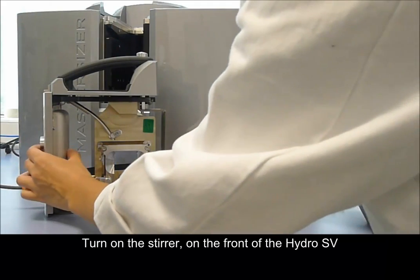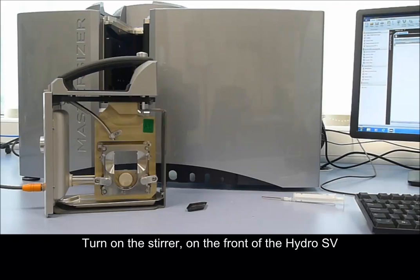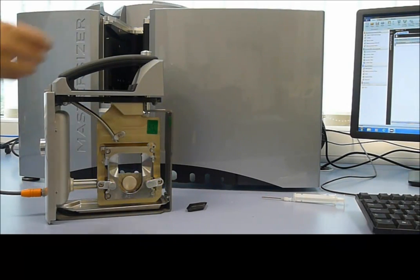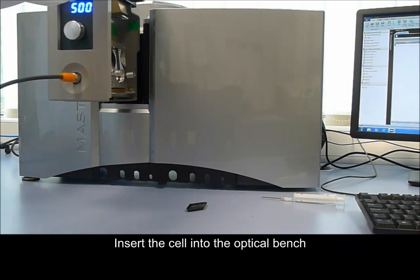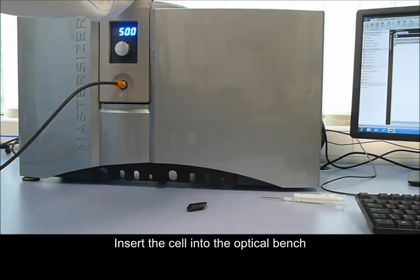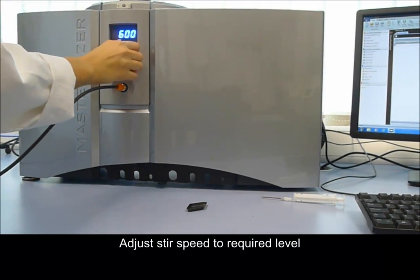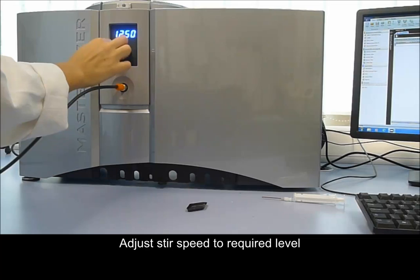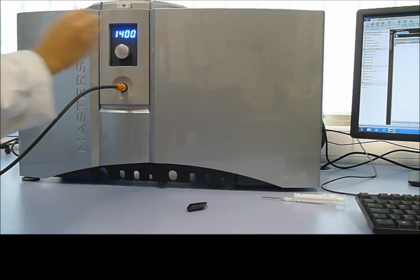Once the cuvette is in place, we can turn on the magnetic stirrer and then insert the measurement cell back into the optical bench. Then we can use the dial on the front of the cell to set an appropriate stir speed for the sample that we are going to measure.